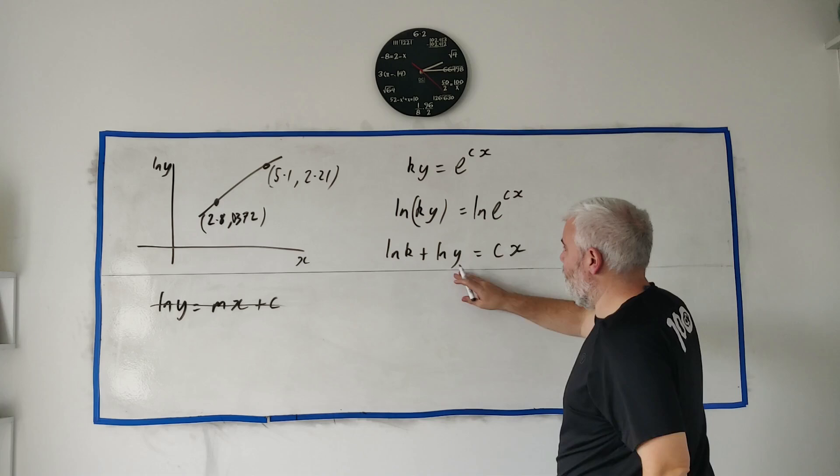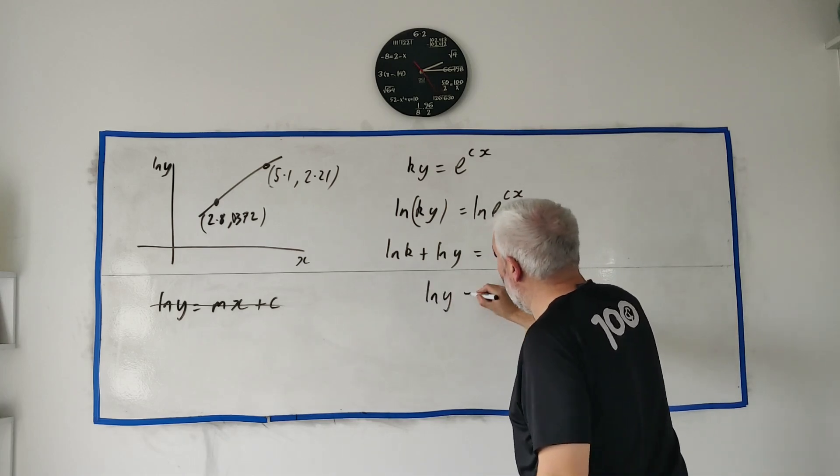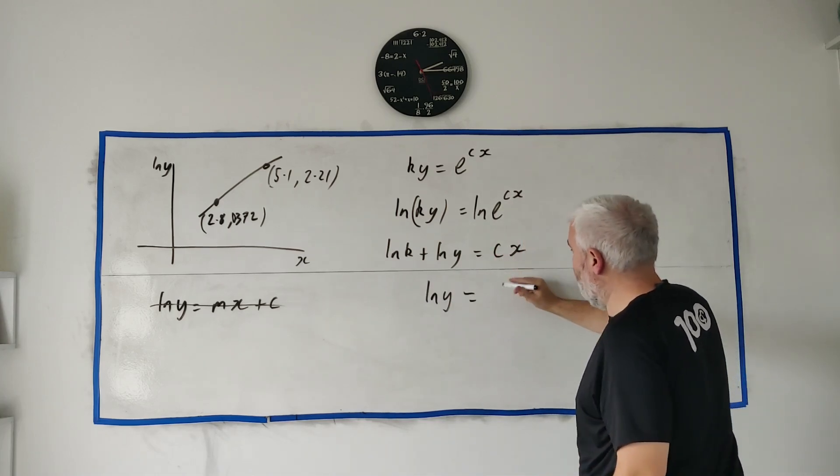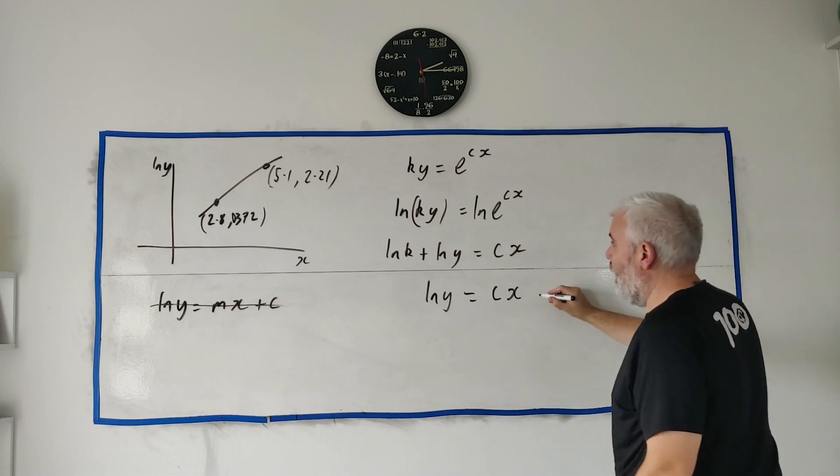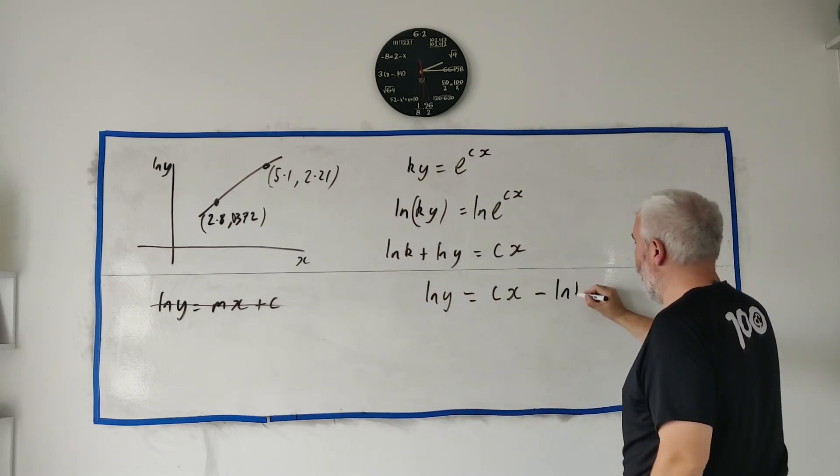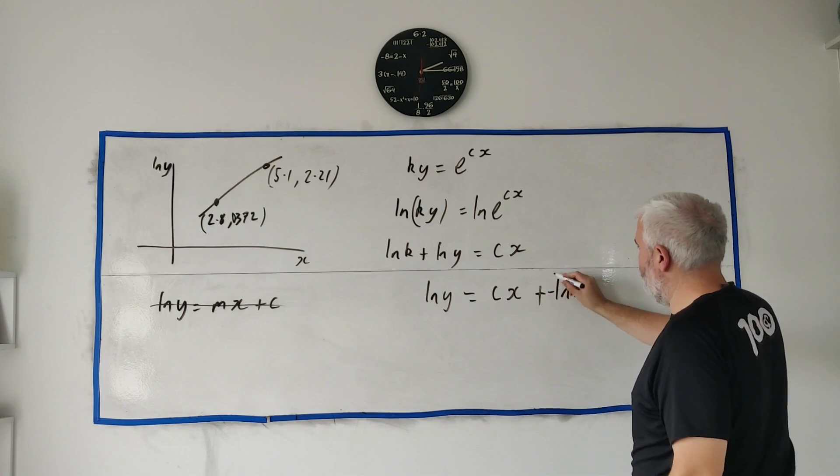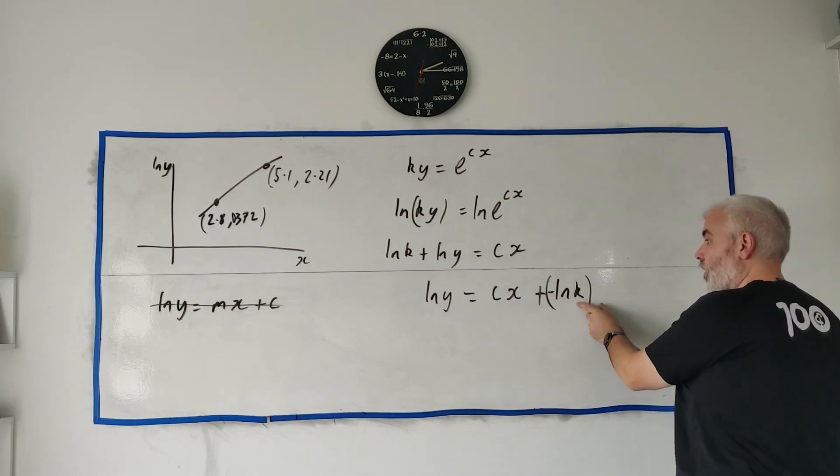Now we're nearly looking like we wanted to look at. Natural log y on its own is equal to something times x plus something. In this case it's plus—let me write it like this—plus minus natural log k.